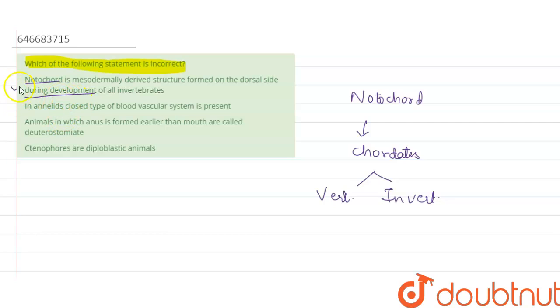Then the second statement is in annelids the closed type of blood vascular system is present. Yes, annelids show close resemblance to humans in terms of circulatory system.